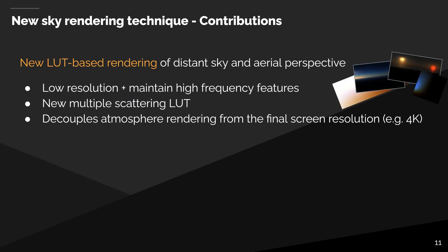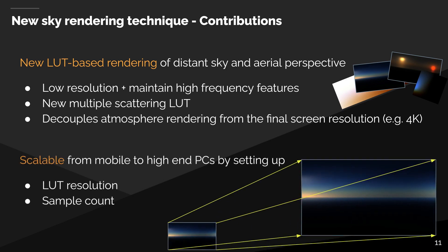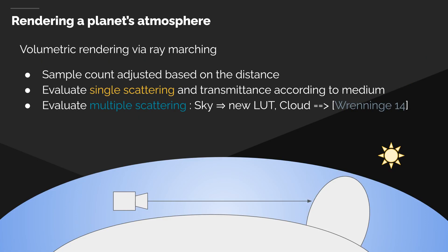From this visual analysis, we propose a way to render all these important visual details using a new set of low-resolution LUTs maintaining high-frequency visual features. These LUTs allow us to decouple atmosphere rendering performance from the screen resolution, making the technique scalable from mobile to high-end PCs by simply tweaking the LUT resolution and the ray-marching sample count. We use typical volumetric ray-marching with sample count adjusted based on distance. For each sample, we evaluate the light transmitted through the atmosphere, the phase function and atmosphere material, from which we can derive the amount of light scattered toward the camera and the transmittance over the background.